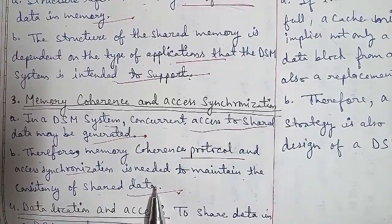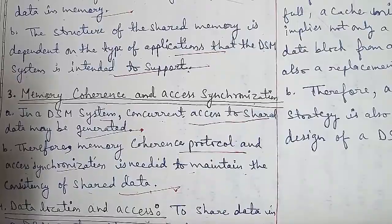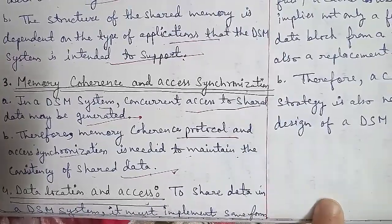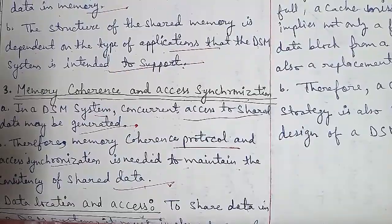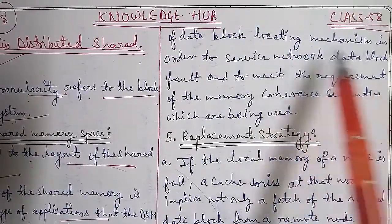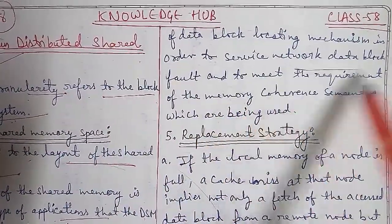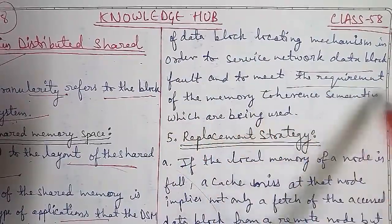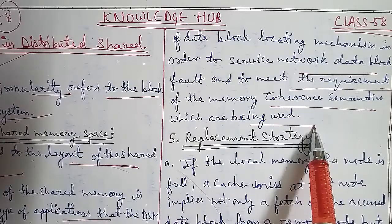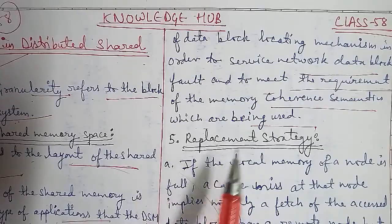Next, we will discuss data location and access. To share data in a DSM system, it must implement some form of data block locating mechanism. This is to service network data block faults and to meet the requirements of the memory coherence semantics being used.